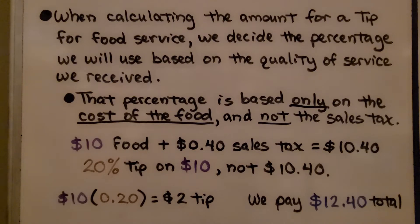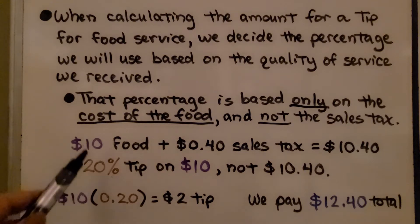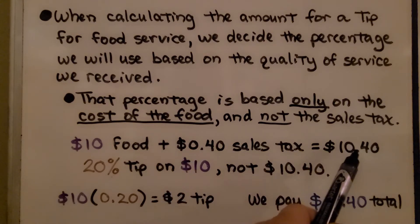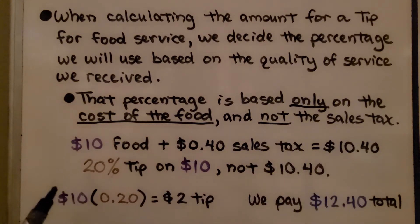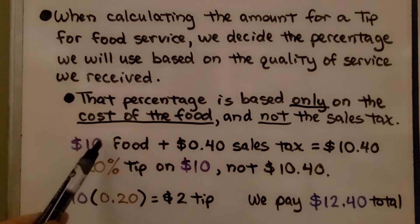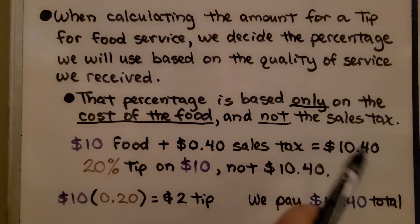When calculating the amount for a tip for food service, we decide the percentage based on the quality of service we received. That percentage is based only on the cost of the food and not the sales tax. We don't want a tip for sales tax. If the food was $10 and there's $0.40 sales tax, that would be $10.40. If we decide to leave a 20% tip because the service was very good, we leave a 20% tip on the $10 of food, not the $10.40 with the sales tax.